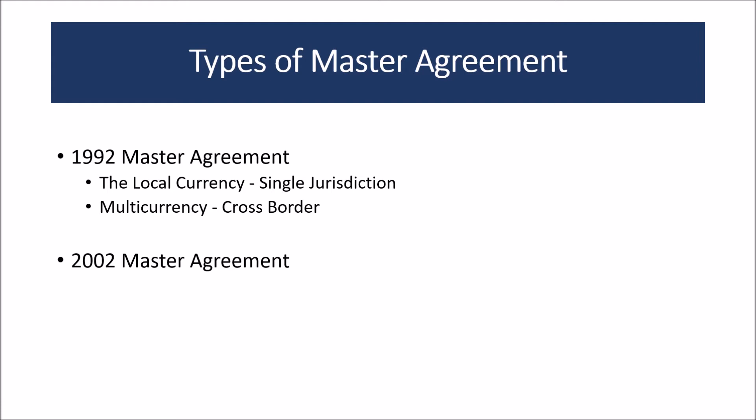There are two versions of the master agreement: the 1992 version and the 2002 version. The 2002 version is the most recent and is considered more aligned with the current standard. However, the parties may also prefer to enter into the 1992 version. There are key differences between these two versions, but we would discuss them in some other video.